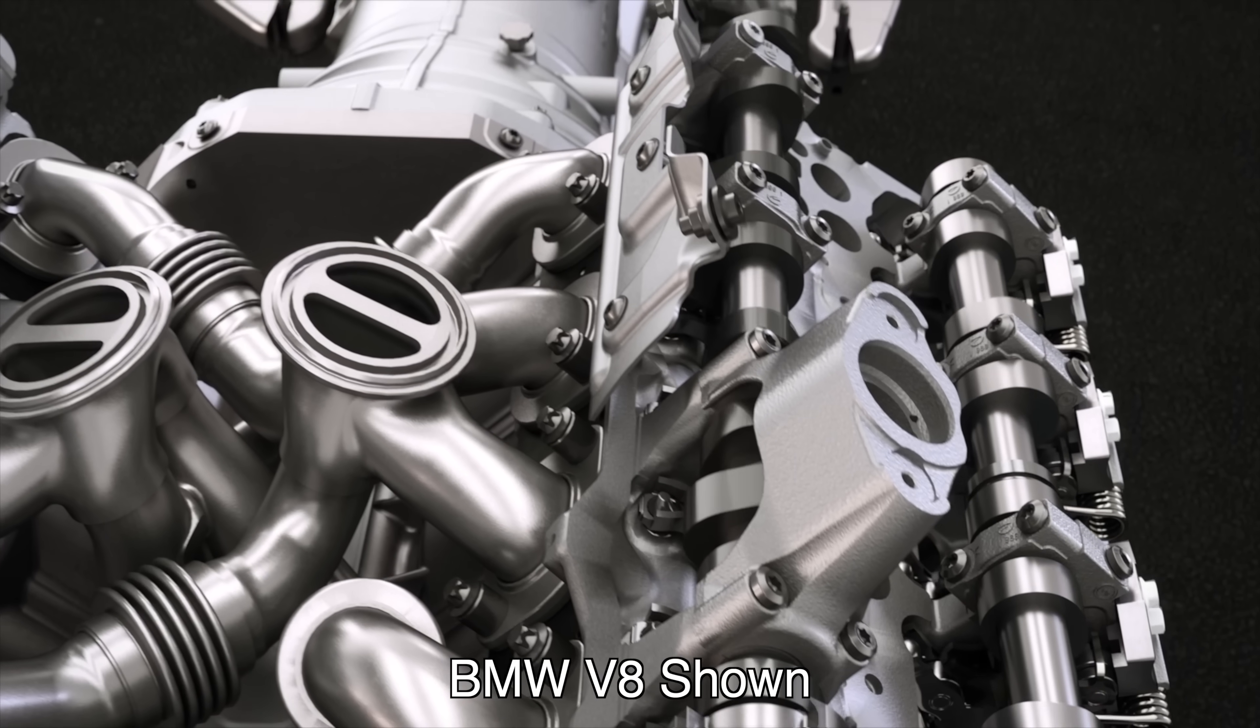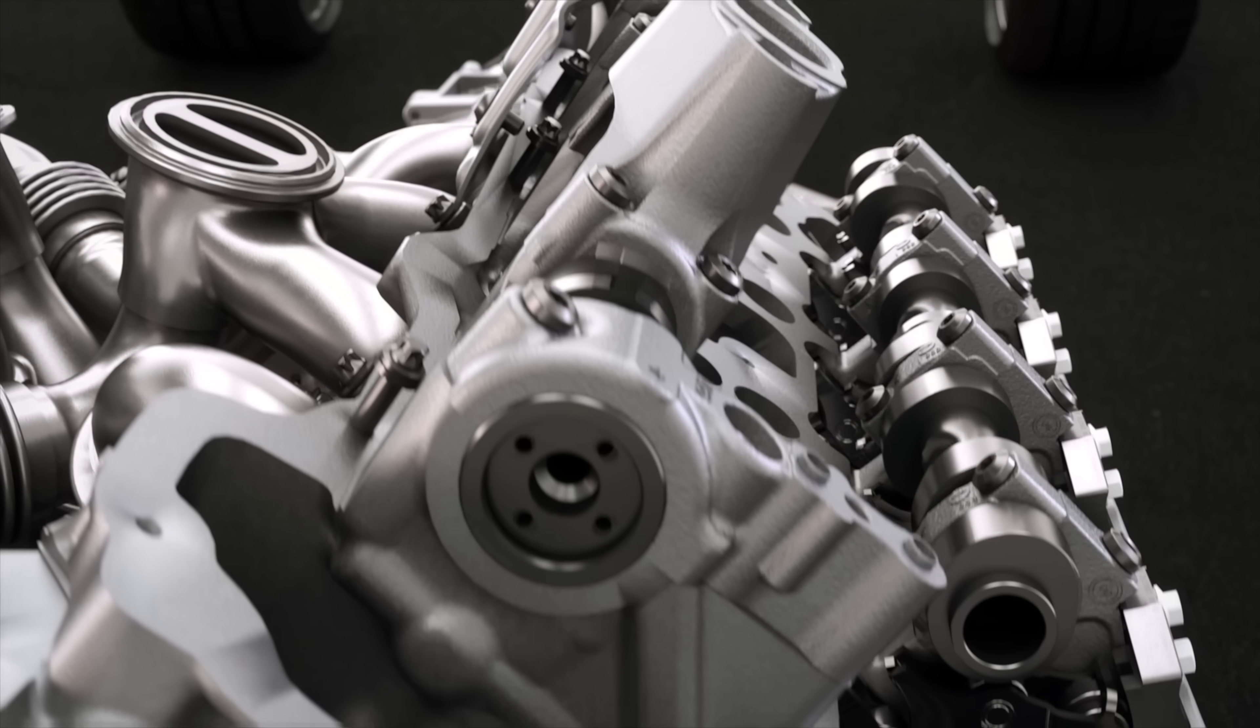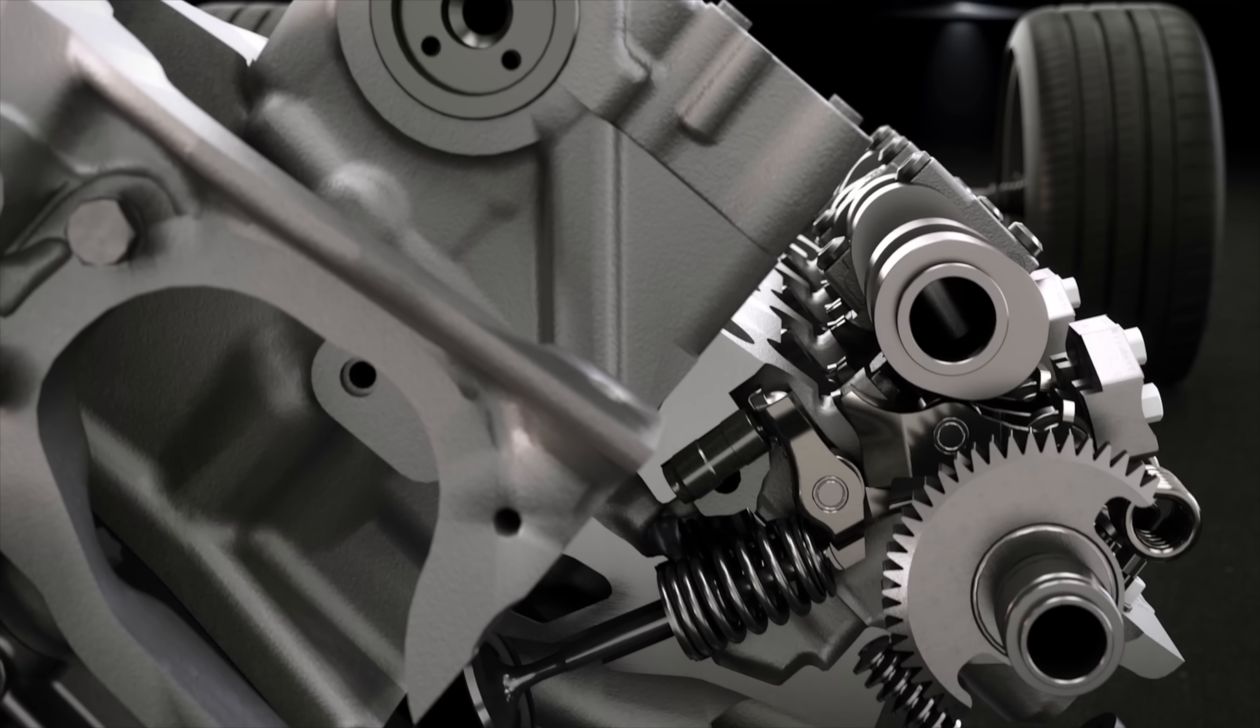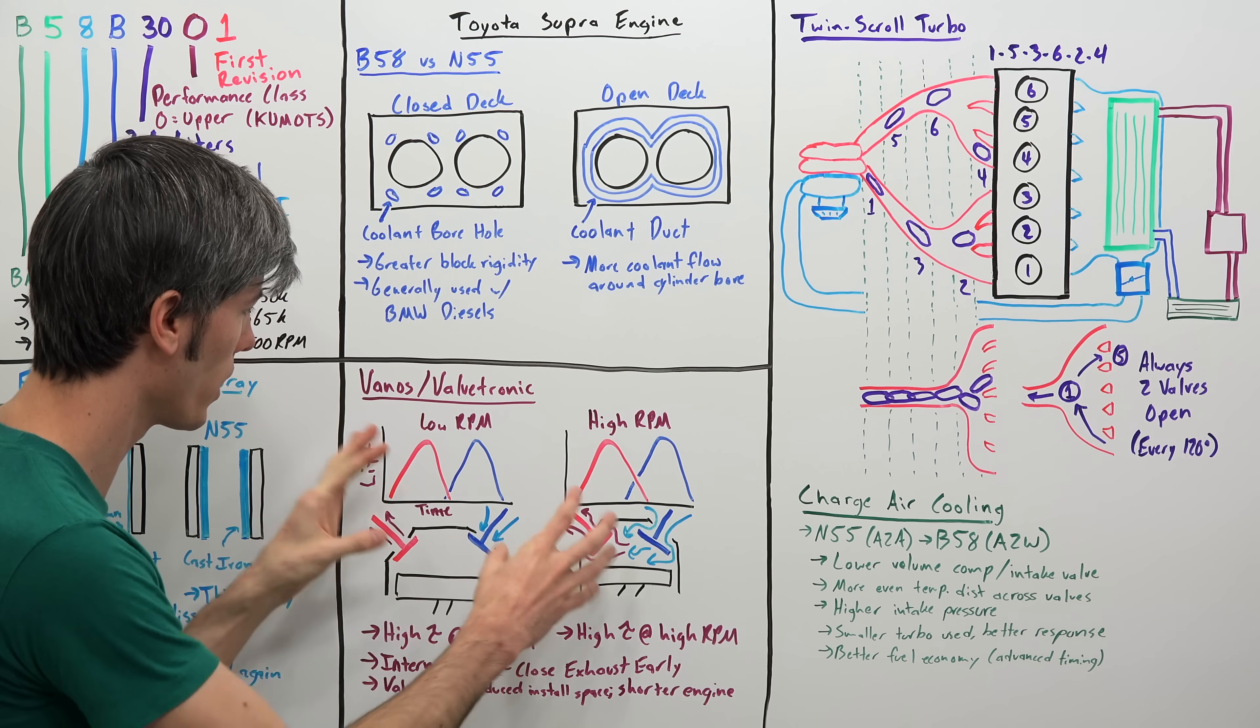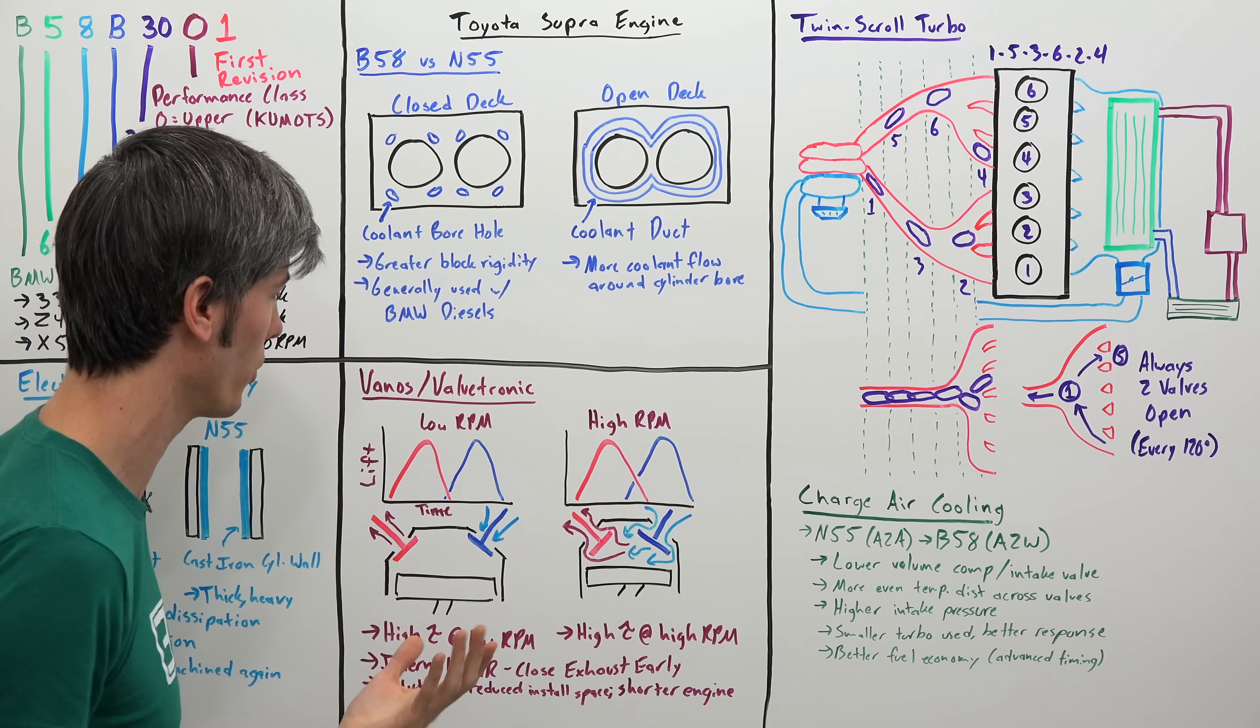The B58 is using both of BMW's valve technologies, Vanos and Valvetronic. So Vanos is valve timing and Valvetronic is valve lift, so variable valve timing as well as variable valve lift. And so here just kind of looking at some different scenarios which BMW has stated how they're using this.